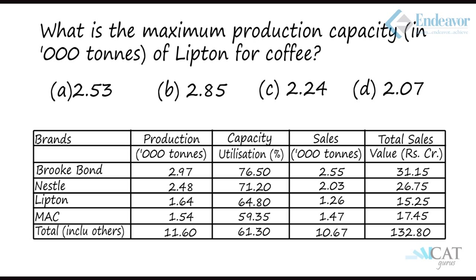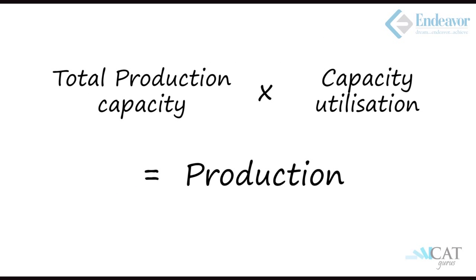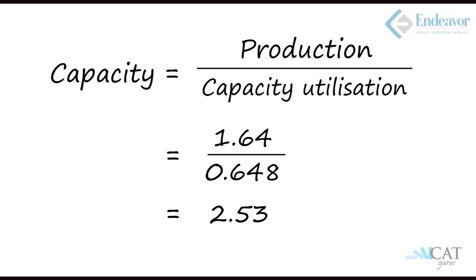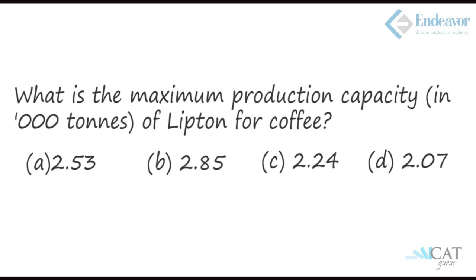Question 1: What is the maximum production capacity in thousand tons of Lipton for coffee? Lipton's production is 1.64 and capacity utilization is 64.8%. Total production capacity equals production divided by capacity utilization, which is 1.64 divided by 0.648, giving approximately 2.53. Hence option A is correct.